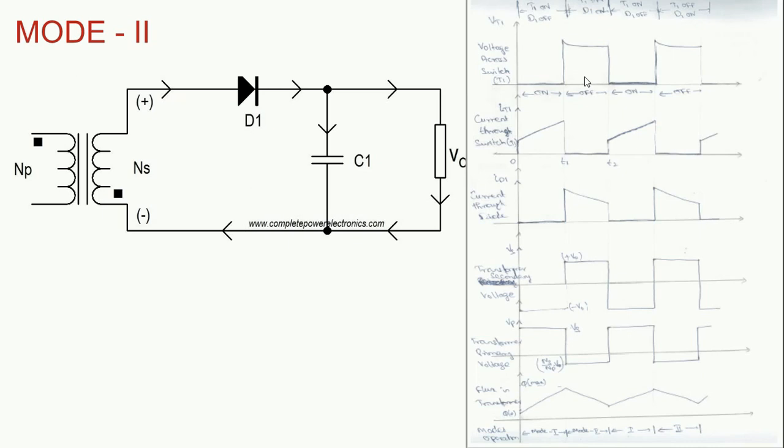And energy stored in the transformer will keep on moving to the capacitor via the diode. So the diode current will ramp down from the maximum value to minimum value. That you can see.